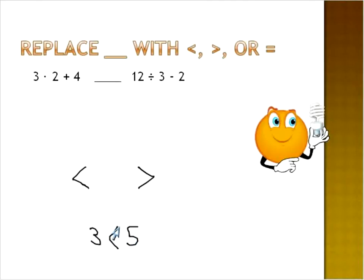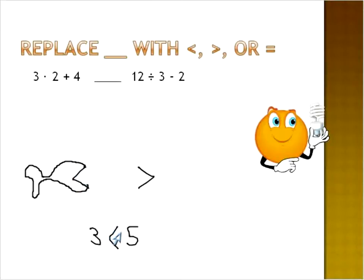Another way people sometimes remember this is they think of it as like a big fish. The side that's open will always go to the larger number — like the fish is really hungry and wants to eat the bigger number all the time. So that helps when you're thinking about it.